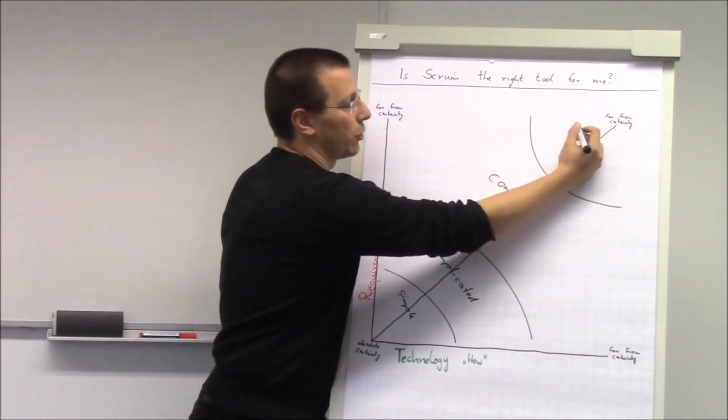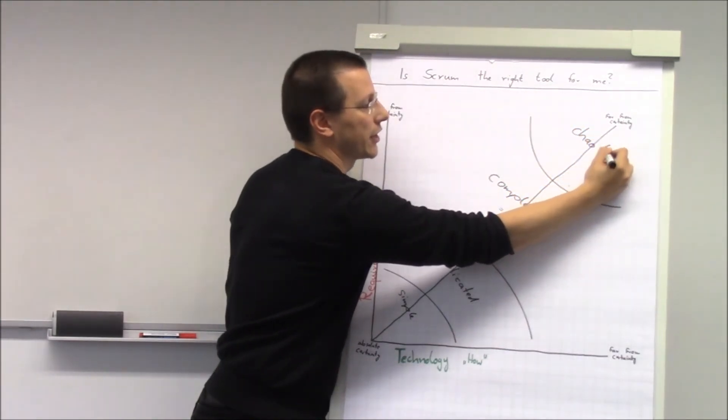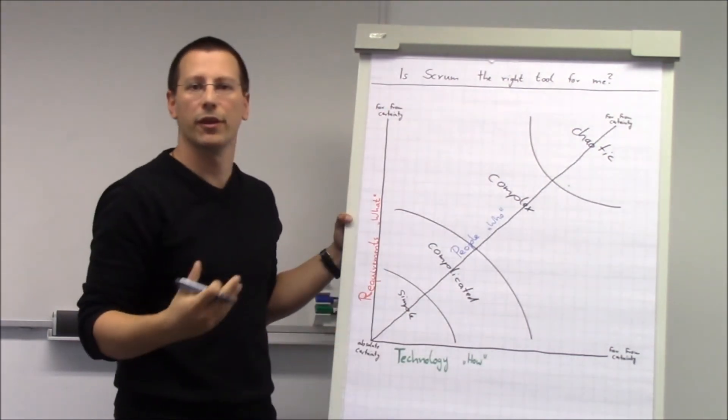And the fourth quadrant is called chaotic. Basically nothing is known.